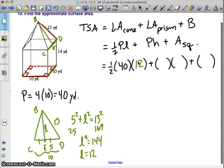Now we can put in our perimeter of our base of our prism, so that's going to be 40. The height of the prism, that's the distance between our two bases, so that's our 14. And then our area of our square is side squared, so we're going to have 10 squared.